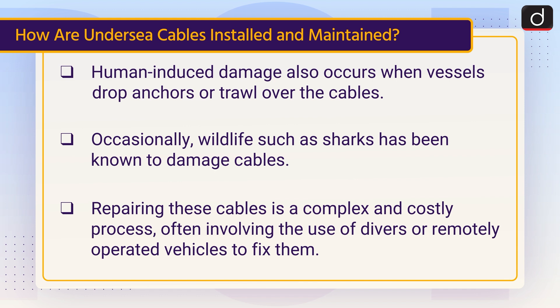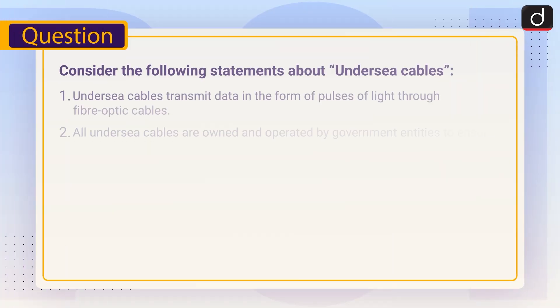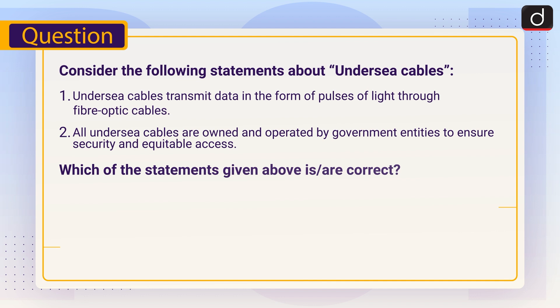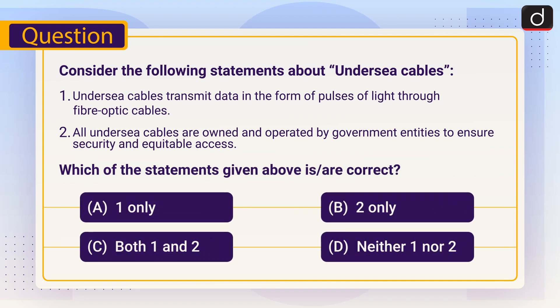Now it is time for a practice question. Consider the following statements about undersea cables. Statement 1: Undersea cables transmit data in the form of pulses of light through fibre optic cables. Statement 2: All undersea cables are owned and operated by government entities to ensure security and equitable access. Which of the statements given above is or are correct? A. One only. B. Two only. C. Both one and two. D. Neither one nor two.